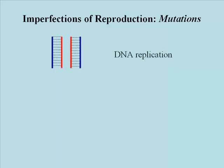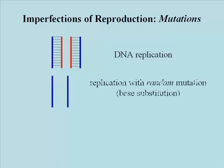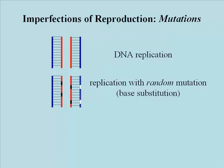Two strands of DNA in a double helix separate and new strands are made. What really happens in most rounds of replication is that some nucleotides are incorrectly incorporated in the process of synthesizing the new strands. This process of mutation is of course random. We're looking here at mutations that are essentially base substitutions.